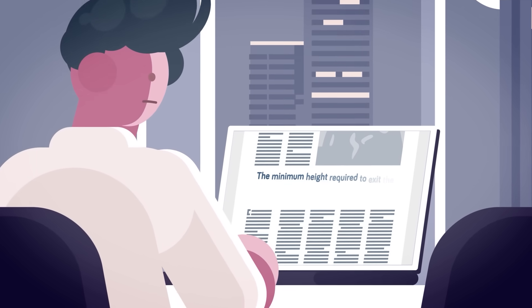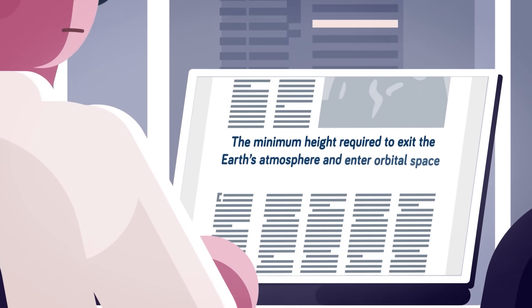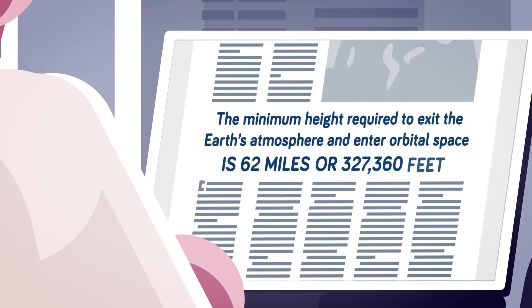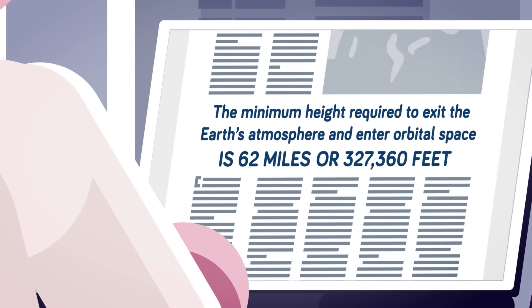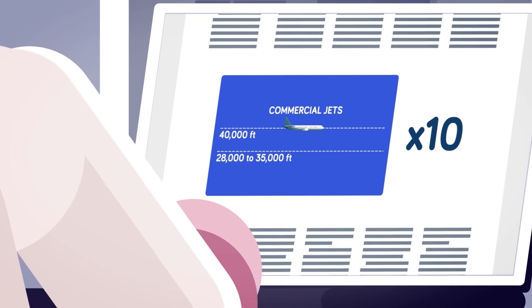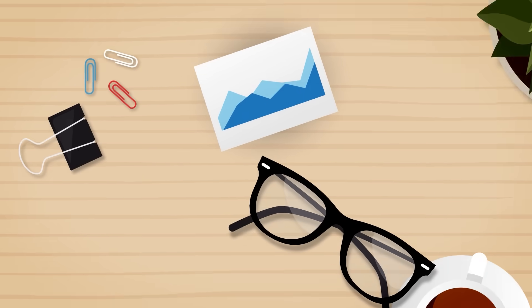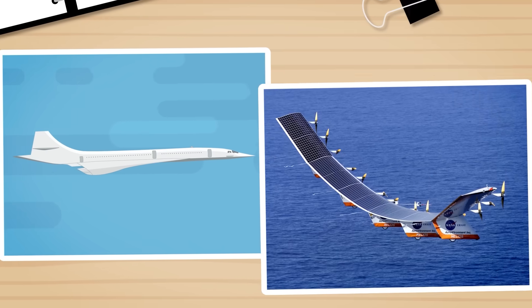Meanwhile, the minimum height required to exit the Earth's atmosphere into orbital airspace is 62 miles, or 327,360 feet. That's nearly ten times the average height most commercial jets tend to fly. So commercial planes and some scientific prototypes can't fly high enough to make it into space.